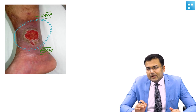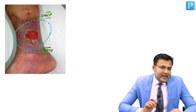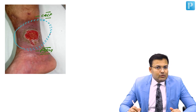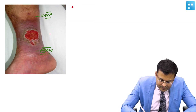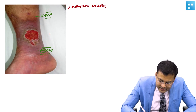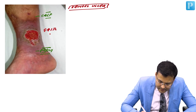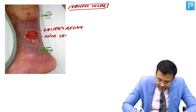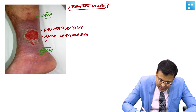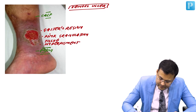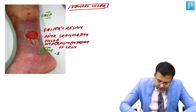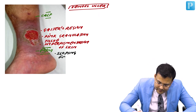You can also see sloping edges — in healing ulcers, there are sloping edges. There is also hyperpigmentation of the skin around the ulcer. So the characteristics of a venous ulcer are: location in the gator's region, pink granulation tissue in the floor, hyperpigmentation of skin around the ulcer, and sloping edges.